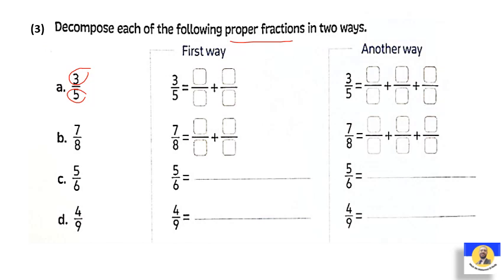أول حاجة أنا بعمله decompose — بقوله إن الـ denominator بيفضل واقف زي ما هو ما بيتغيرش. يعني الـ 5 اللي في الـ denominator هتفضل زي ما هي 5 without changing. هعمل plus — اللي شايفي 3 دي؟ هدور على numbers هعمل لهم plus مع بعض يديوني 3. مين ومين؟ ممكن 2 plus 1. فأقدر أكتبهم على شكل unit fractions: 3 over 5 تكون 1 over 5 plus 1 over 5 plus 1 over 5. يبقى نقدر نغير 3 over 5 لـ unit fractions.